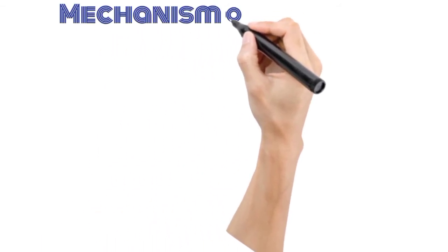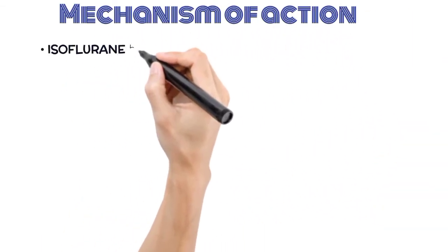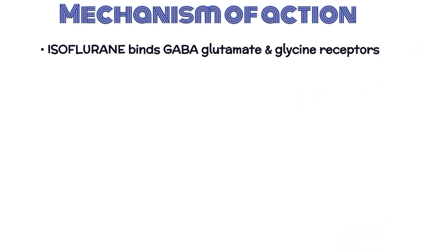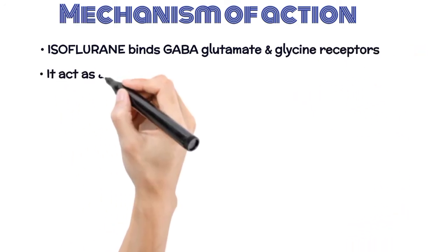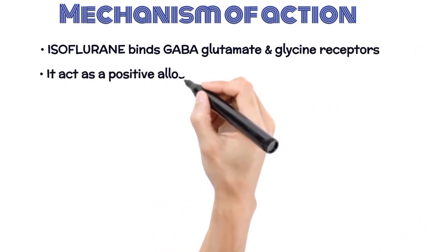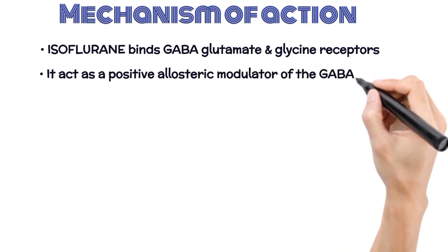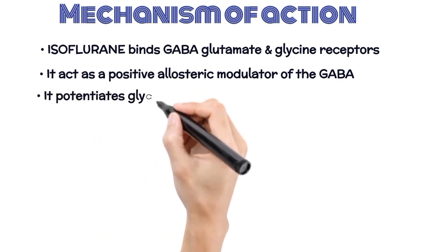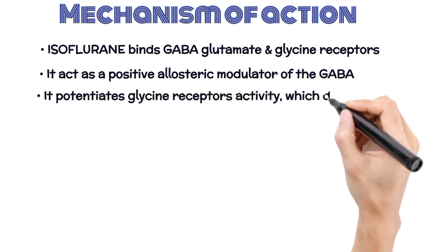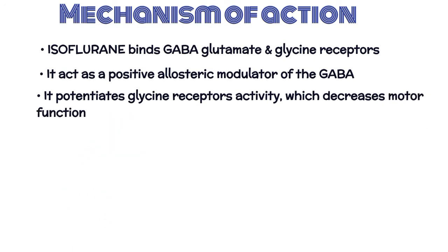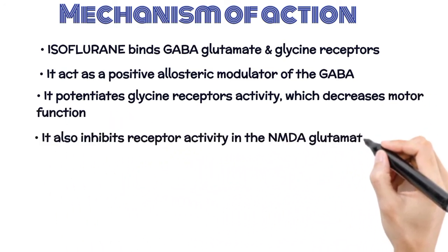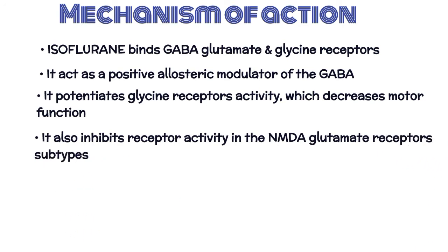Mechanism of action: Isoflurane binds GABA, glutamate, and glycine receptors but has different effects on each receptor. It acts as a positive allosteric modulator of the GABA receptor in electrophysiology studies of neurons and recombinant receptors. It potentiates glycine receptor activity, which decreases motor function. It also inhibits receptor activity at NMDA glutamate receptor subtypes.